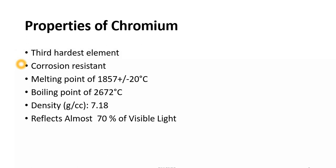Chromium does not oxidize easily. It is made inactive by means of oxygen, which forms a thin defensive oxide layer. This layer is just a few atoms thick and is very dense. The layer prevents diffusion of oxygen into the underlying material.